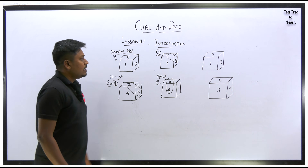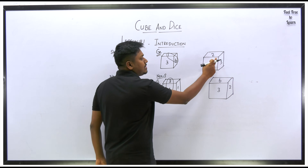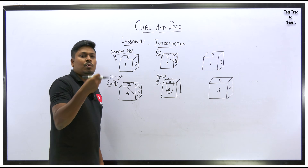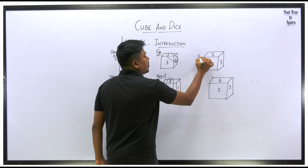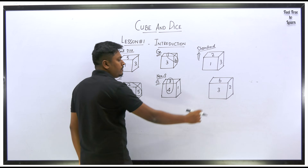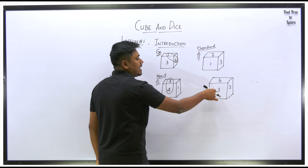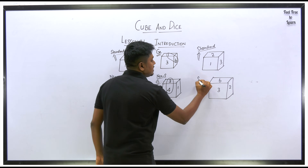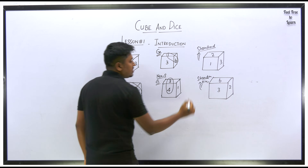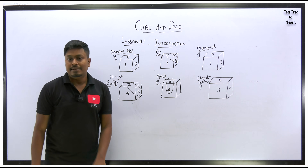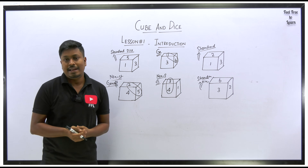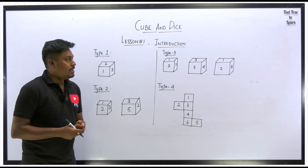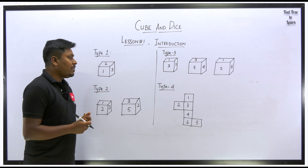Example five: faces one, two, and three. Two plus three is five, three plus one is four, two plus one is three — no adjacent pair sums to seven, so this is a standard dice. Example six: faces six, two, and three. Six plus two is eight, six plus three is nine, three plus two is five — no adjacent pair sums to seven, so this is a standard dice. Always check adjacent faces first to identify the dice type before solving the question.